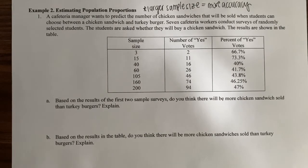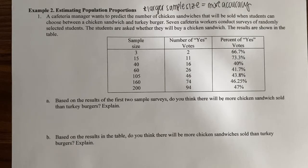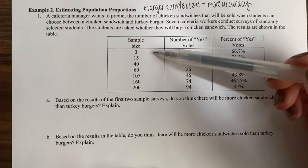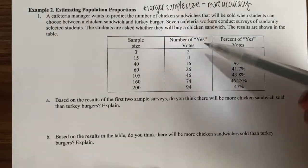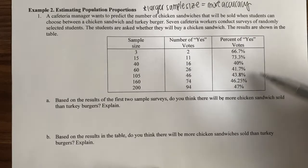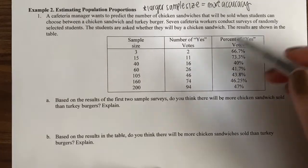In example two, a cafeteria manager wants to predict the number of chicken sandwiches that will be sold when students can choose between a chicken sandwich and a turkey burger. Seven cafeteria workers conduct surveys of randomly selected students. The students are asked whether they will buy a chicken sandwich. The results are shown in the table. As we can see, the sample size varies between all the surveys. This column tracks the number of yes votes, and this column tracks the percent of yes votes.